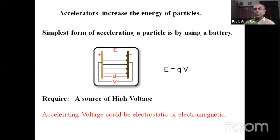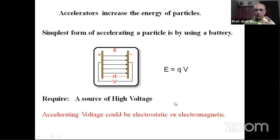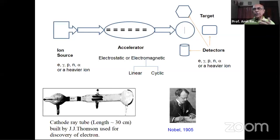How did it all start? A general schematic of the accelerator is given here. The main accelerator has high voltage generated by some means, either electrostatic or electromagnetic. It could be a linear type or a cyclic type of accelerator. We will see some examples of different types of accelerators that people have built, including some in India. For the acceleration, you need a charged particle — it could be a negatively charged particle like an electron, or a positively charged particle like a proton or an alpha particle.